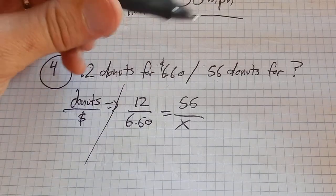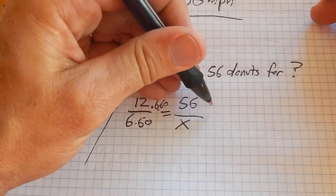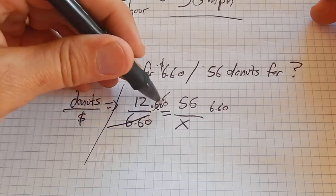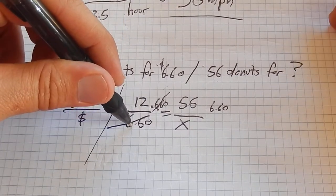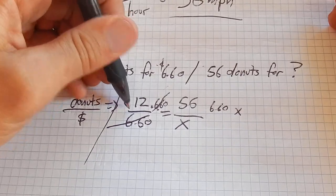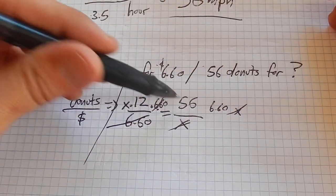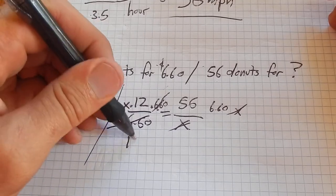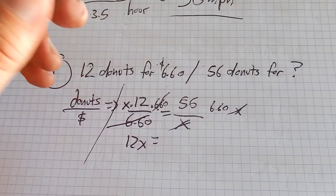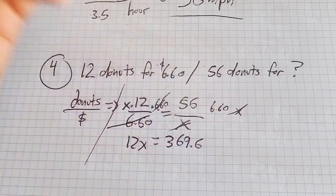So what I'm going to do is multiply both sides by 6.60. And what that does is that cancels it out on this side. It divides it out. That divided by itself is 1. And then if I multiply both sides by x as well, that divides out to a 1 over here. So I just want this times this, this times this. And I end up with 12 times x equals 56 times 6.60. I'll grab my calculator. 369.6.